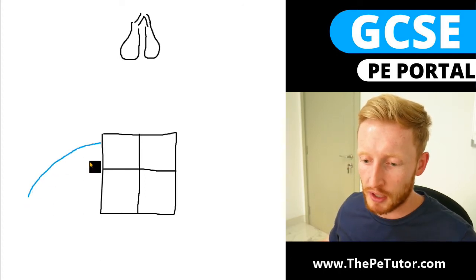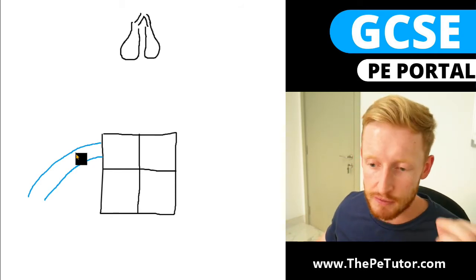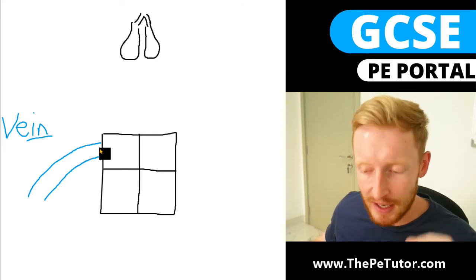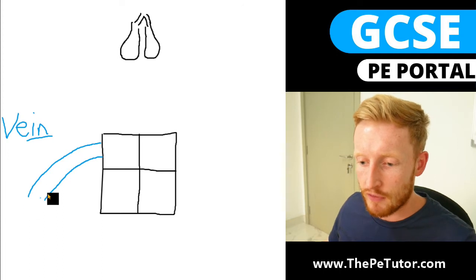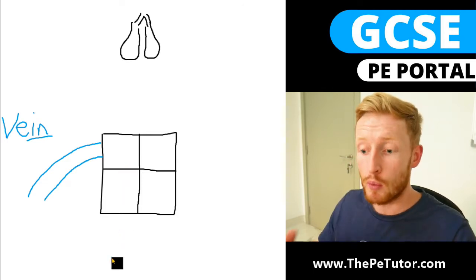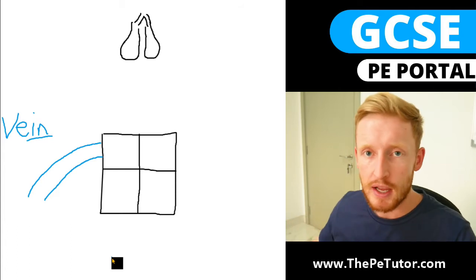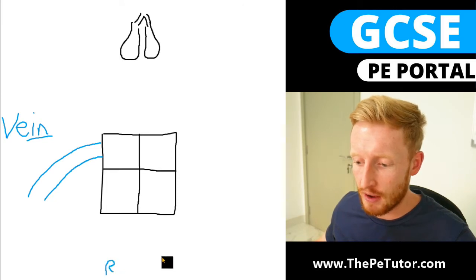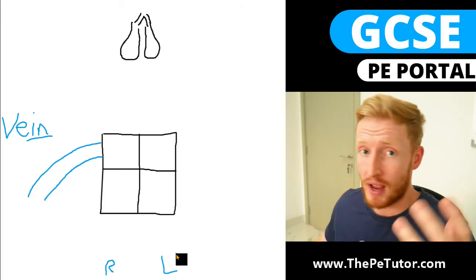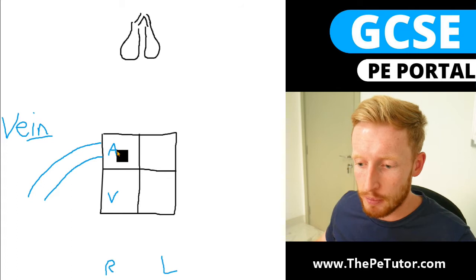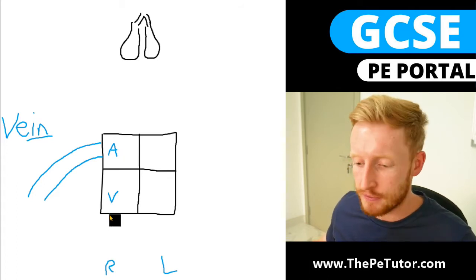We've got our vena cava bringing blood back into the heart. Why is it the vena cava? Well, because it's a vein — and if we think about the spelling of vein, veins take blood back into the heart. So this vena cava is bringing deoxygenated blood back into the heart. We know it's the right-hand side because we always talk about the body anatomically from the perspective of the person. As for the chamber, think about the spelling: 'A' looks like an upward arrow and 'V' looks like a downward arrow, so atriums are at the top and ventricles are at the bottom.